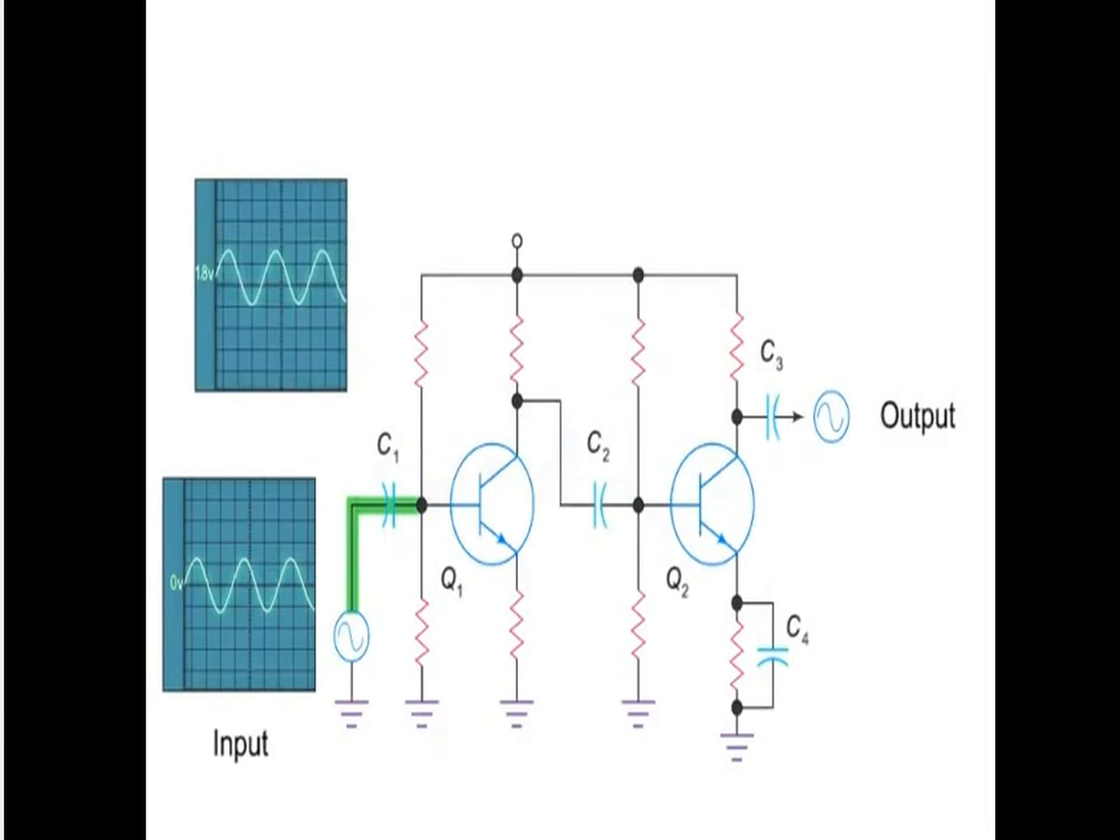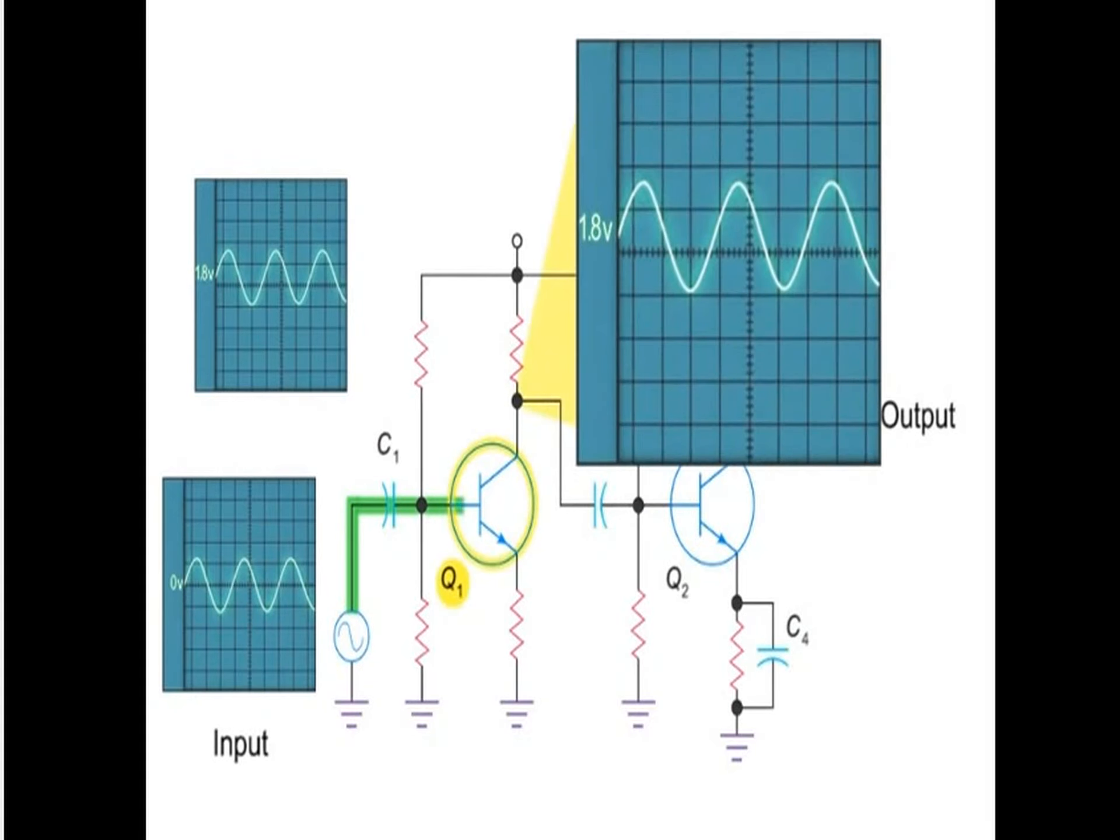The signal next passes through the first transistor, Q1. This process produces a larger and inverted AC signal at the collector and also adds a DC voltage of 5 volts.